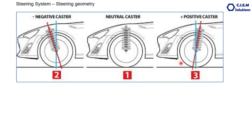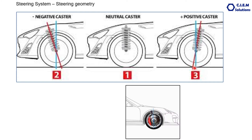Generally, the caster in four-wheeler automobiles ranges from 6 to 8 degrees. You can see how the caster works in this animation — this is the central line and the steering axis is like this.